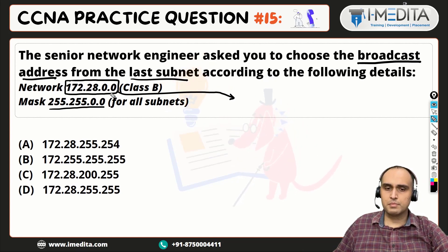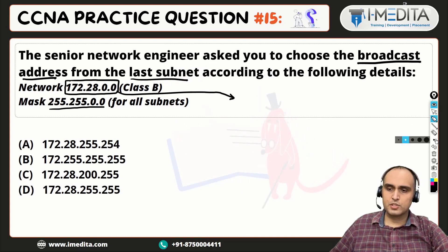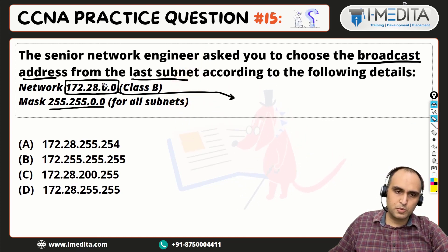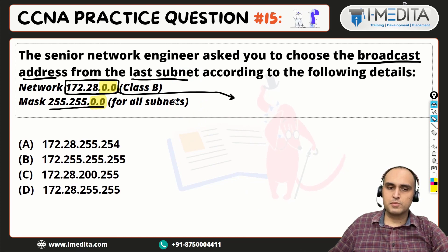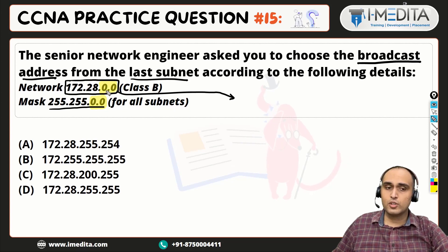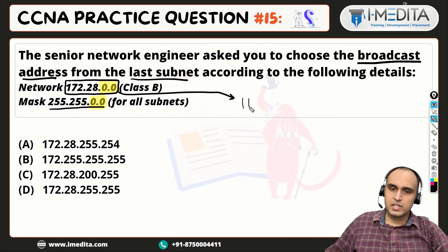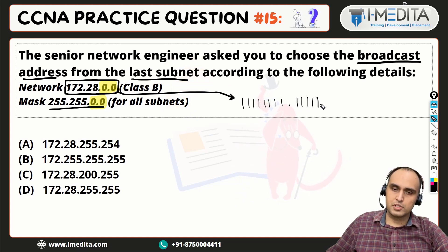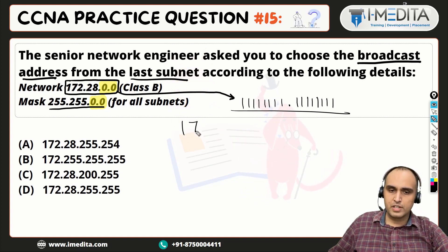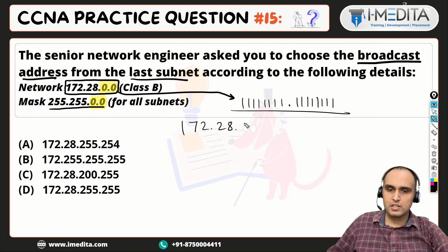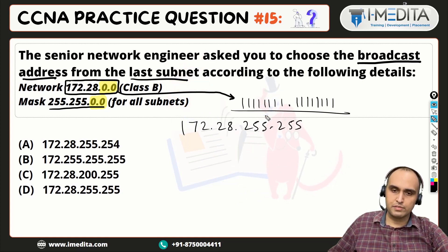All the host bits are set to all ones. We have a host portion of two octets, because the subnet mask has zeroes in the third and fourth octets. So the third and fourth octets will be 11111111, and the answer to this question will be 172.28.255.255.